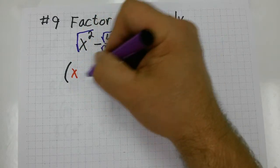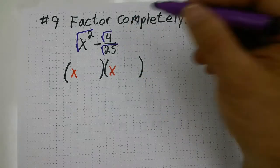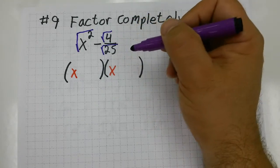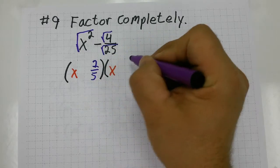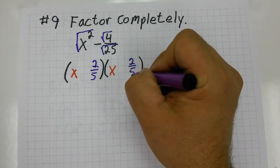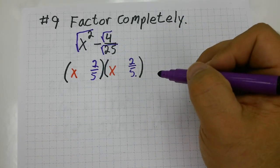If you square root x squared, you get x and you double it down. So, the square root of 4 is 2 and the square root of 25 is 5. So, 2 fifths times 2 fifths can multiply together to equal 4 over 25.